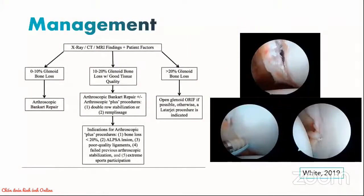Surgical management of patients with macrotraumatic shoulder instability is dependent on, number one, patient lifestyle factors and, number two, imaging findings. In most simple cases with an anterior labral tear, the patient undergoes an arthroscopic Bankart repair where the tear is repaired through anchor sutures as shown by the spot images on the right. In more complex cases with varying degrees of glenoid bone loss or Hill-Sachs lesion, the patient may undergo a Latarjet procedure or a Bristow procedure to account for this increased risk of repeated dislocation.